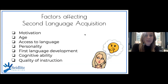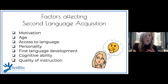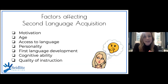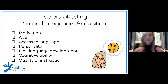Let's start with some factors affecting SLA — second language acquisition. We know that motivation plays into it, the student's age when beginning a second language, access to language — meaning the sentence stems, visuals, and opportunities to interact that teachers provide — personality, first language development, cognitive ability, and quality of instruction. All of these, to some extent, affect the second language development in our students.